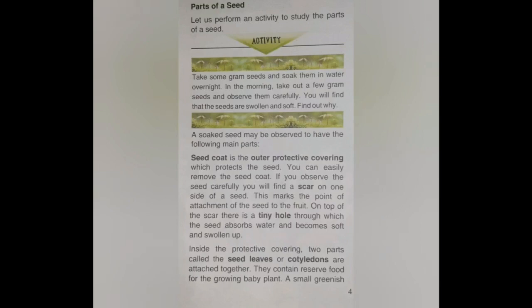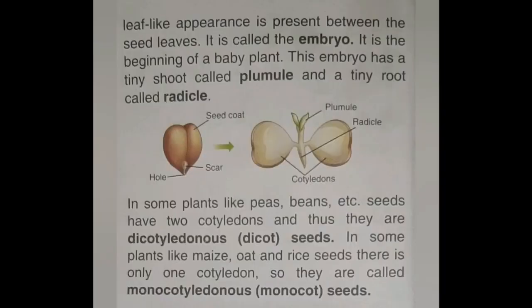So dear students, in this video we have seen monocotyledon and dicotyledon seeds and their parts. What are the parts? The outer covering which provides seed protection is called the seed coat. Under this seed coat are the leaves which provide nutrients when the seed is in the soil. Inside is the embryo — the baby plant — which grows into a new plant. The lowest part of the embryo is the radicle.